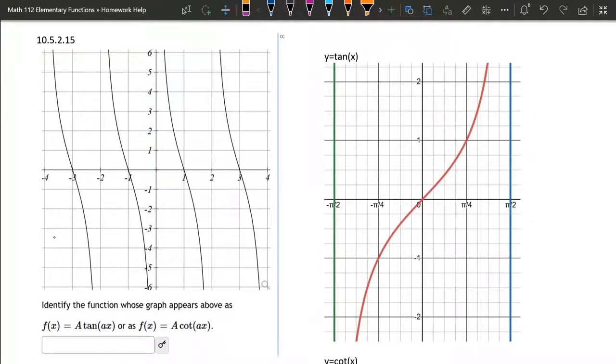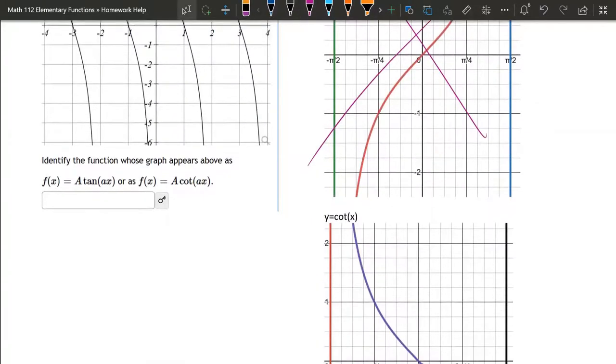So first of all, is it tangent or cotangent? Well, the cotangent graph is decreasing. The tangent graph is increasing, so it's not the tangent graph, it's definitely the cotangent graph.